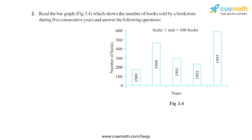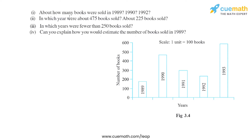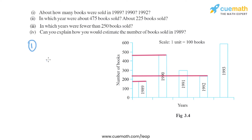The first part asks about how many books were sold in 1989, 1990, and 1992. We will draw a horizontal line and check the approximate number of books sold. As we can see, the number of books sold in 1989 is very close to 200, so approximately 180 books were sold.